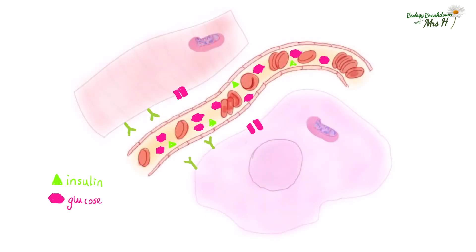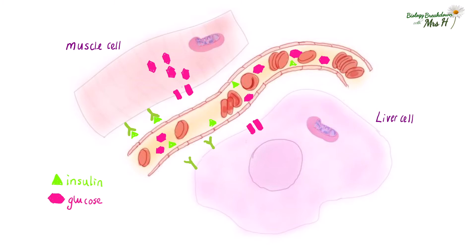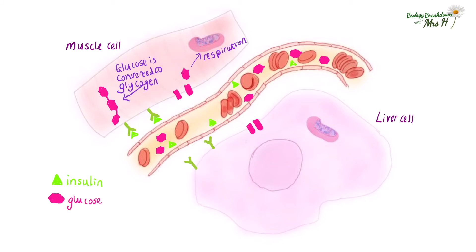Here we can see a capillary carrying blood with a high concentration of glucose and insulin that has been secreted by the pancreas. The liver and the muscle cells have receptors for insulin. When insulin attaches to the receptors on the muscle cell, this enables glucose to diffuse easily into the muscle cell. Some of the glucose will be used in respiration to release energy, and insulin also enables excess glucose to be stored as glycogen.